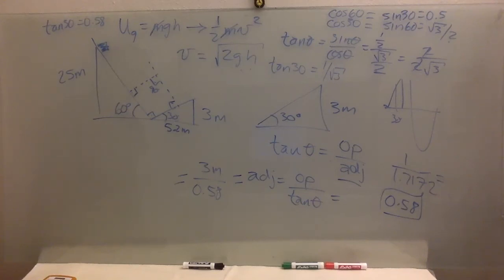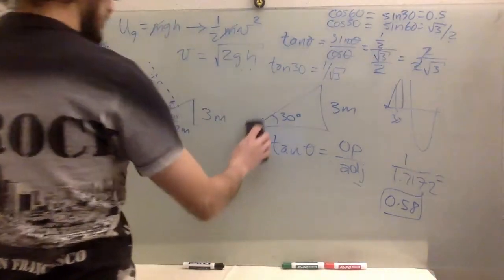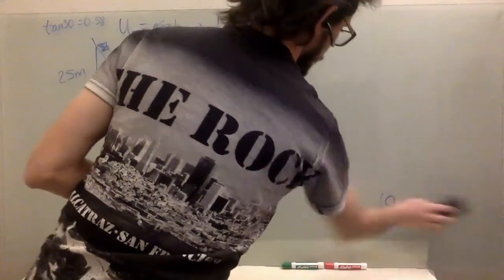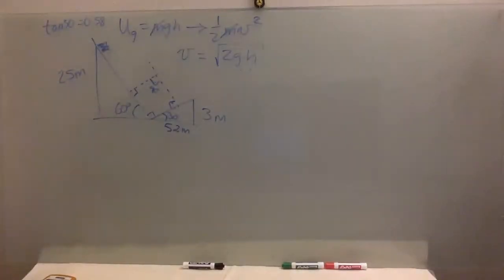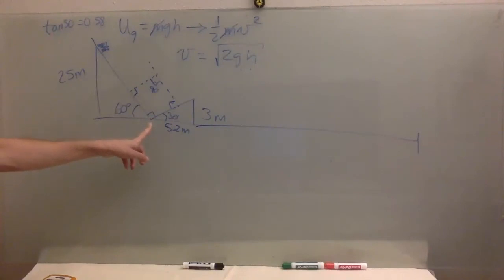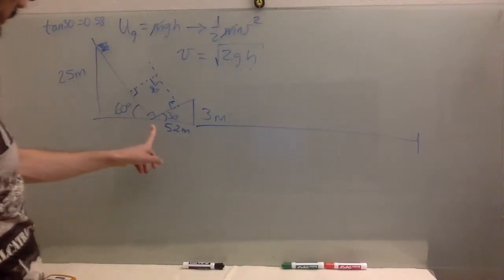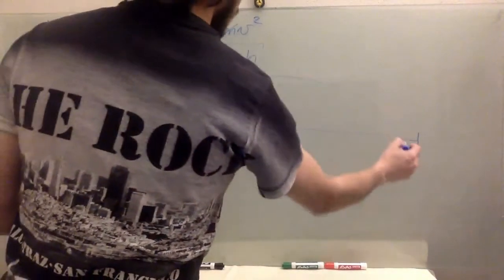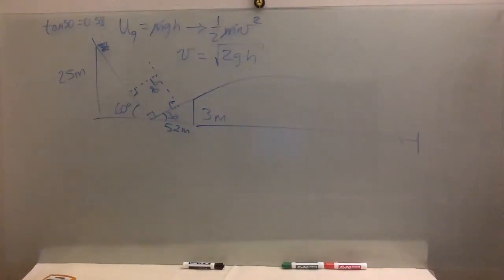Right. Okay. So we pretty much got all the trigonometry part of the problem. So let's go on with the physics. We know what is going to be the velocity at the very bottom. We know what is this angle. We know what is this distance. So we just need to calculate the range using, we can use the kinematic equations for that.